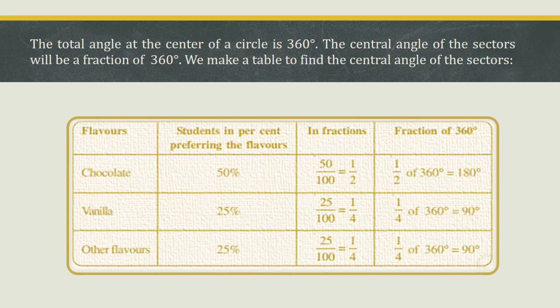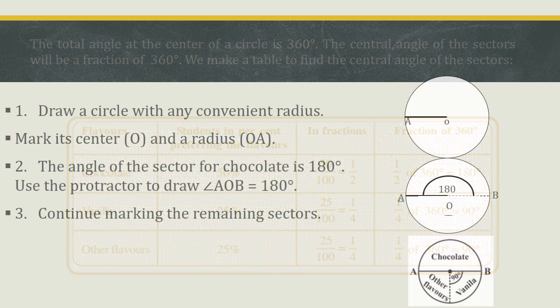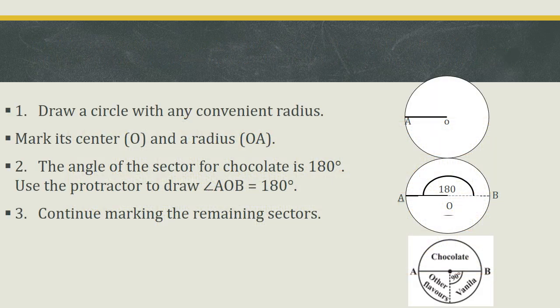The next one is also 1/4, so 1/4 × 360° = 90° for other flavors. Steps for constructing the pie chart: draw a circle of any convenient radius, mark the center as O and radius OA. The angle of the sector for chocolate is 180°, so construct that angle. Continue marking the remaining sectors: for vanilla, construct an angle of 90°, and other flavors also 90°.